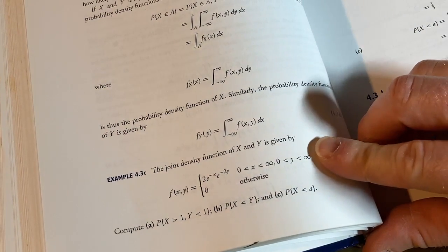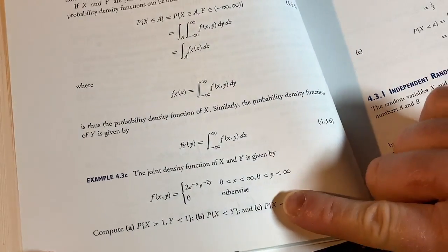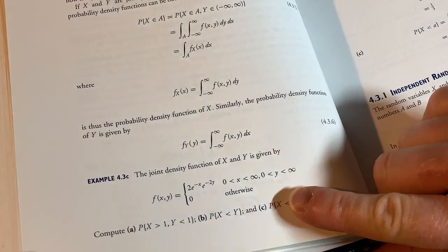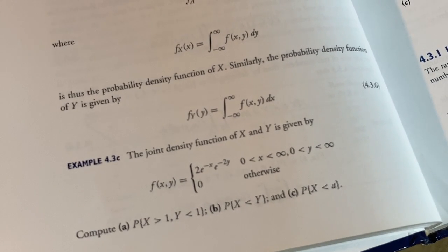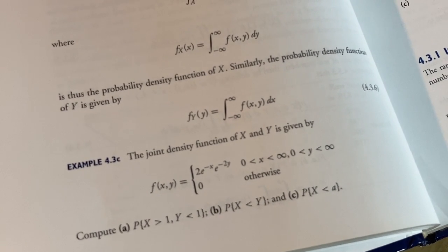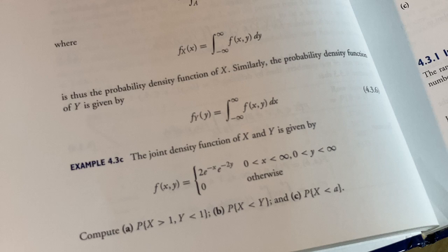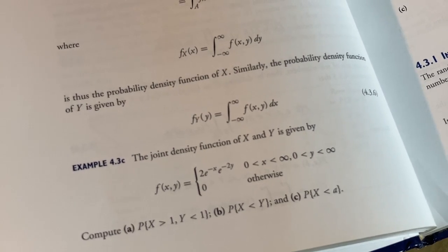It says the joint density function of x and y is given by. And so they give you this piecewise function. They're saying f of x y is equal to 2 times e to the negative x times e to the negative 2y when x and y are between 0 and infinity. And it's 0 otherwise.